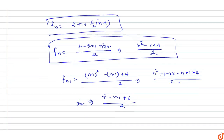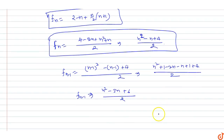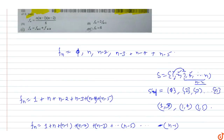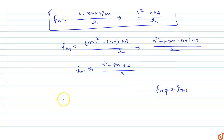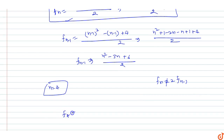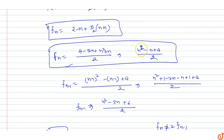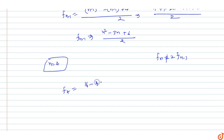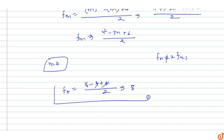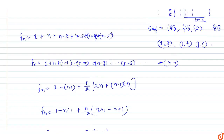Checking option: is f(n) equal to 2 × f(n-1)? No, it is not. Now let's find f(4): put n = 4 into the formula. f(4) = (16 minus 4 plus 4) / 2 = 16 / 2 = 8. So f(4) equals 8.